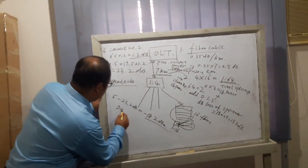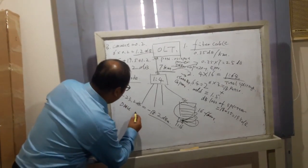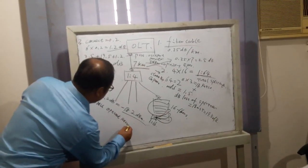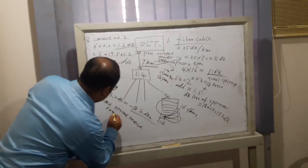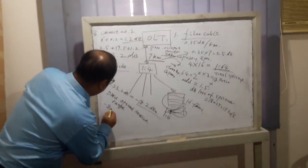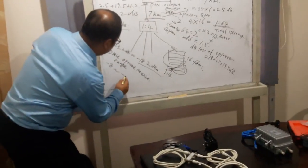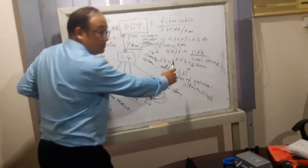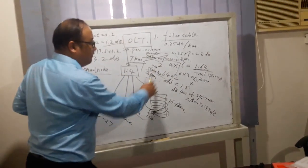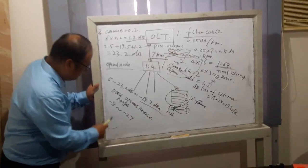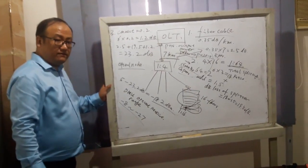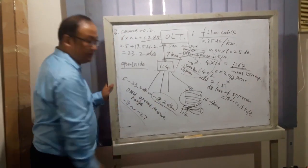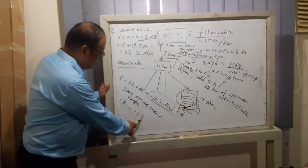And the ONU optical received range is minus 8 to minus 27 in the standard PX20 plus and Class B plus for E-PON and G-PON. The range of optical received. We can see this parameter is in this range, so it works.